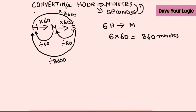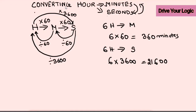Now convert 6 hours to seconds. You're multiplying by 60 twice, so multiply by 3600. 6 × 3600: put the zeros, then 6 × 6 = 36, carry 3, 6 × 3 = 18 + 3 = 21. So the answer is 21,600 seconds. Don't forget to write the unit 'seconds'.